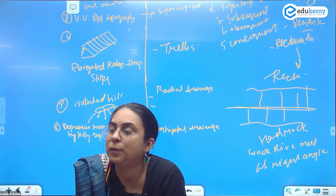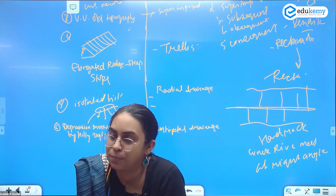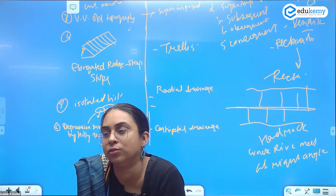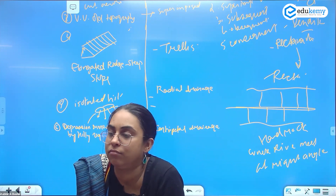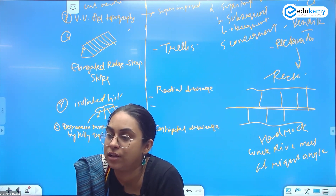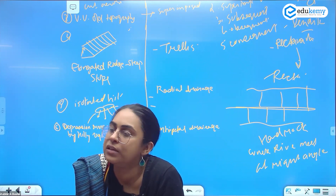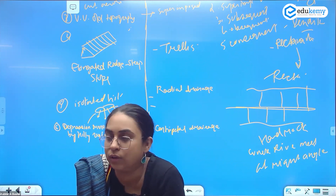So physiography again determines your pattern. The northern plains are generally dendritic. The Peninsular Plateau can generally be rectangular. Centripetal is where you have playa lakes and rann areas. So to summarize: soft rocks with uniform lithology give dendritic; old topography gives superimposed; elongated ridge with steep slope gives trellis; isolated hill gives radial; depression surrounded by hills gives centripetal; hard rocks with right-angle junctions give rectangular.